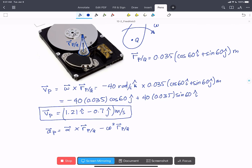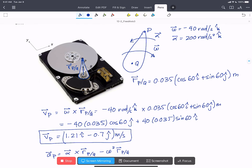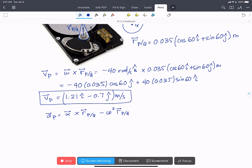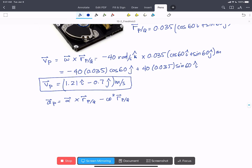In this case, we're told that alpha is not zero, so we can't eliminate that term. Both alpha and omega are non-zero. So we're going to write out our whole equation. We know alpha is 200 rads per second squared in the K hat direction.